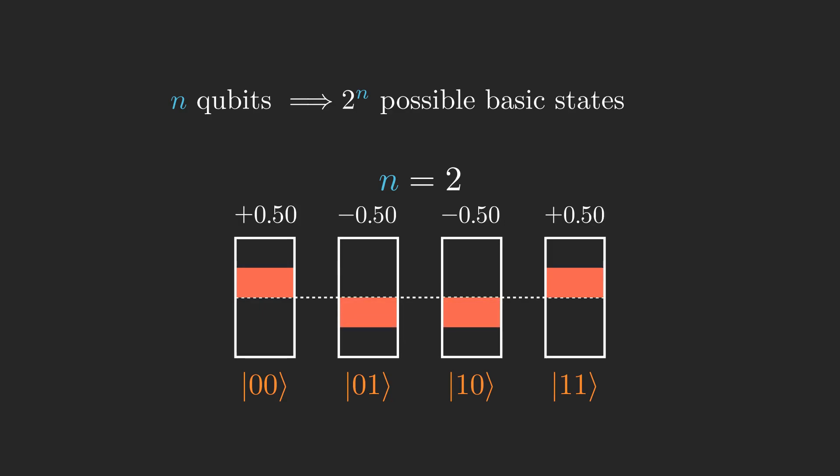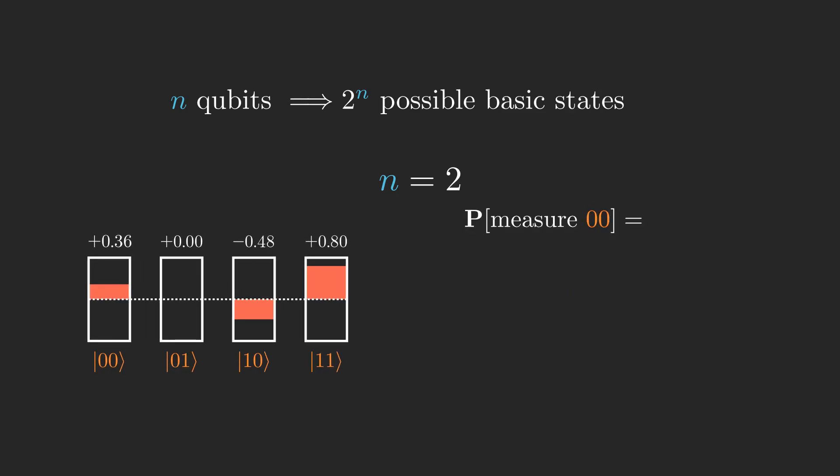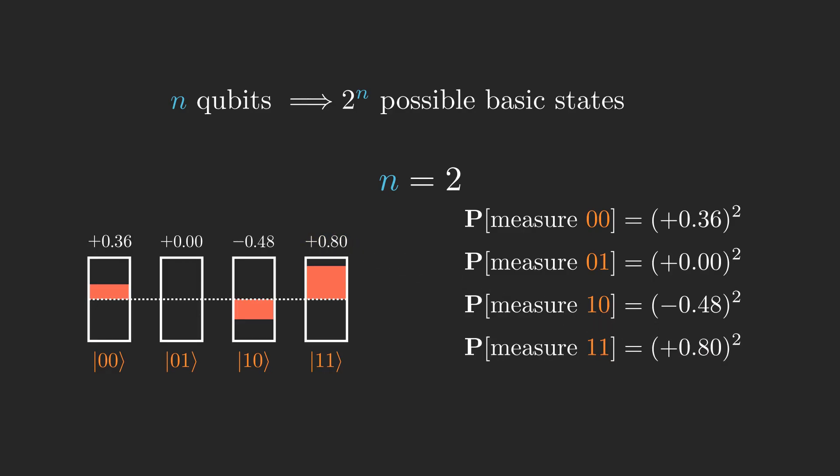There is some amplitude on each of these basic states, where again, the sum of the squares of the amplitudes is 1. So in this example, the probability of measuring 0,0 is 0.36 squared, the probability of measuring 0,1 is 0, the probability of measuring 1,0 is minus 0.48 squared, and the probability of measuring 1,1 is 0.8 squared.